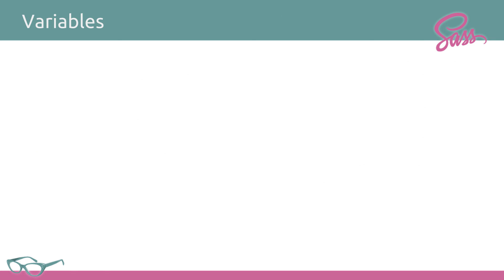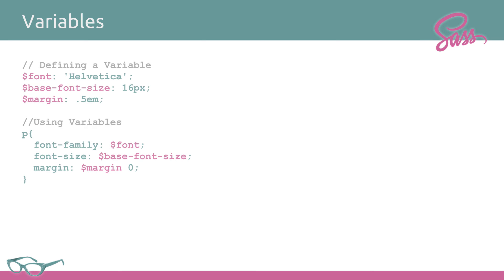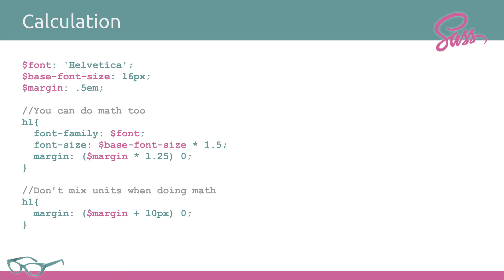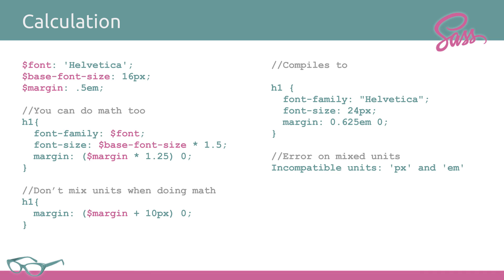The first and most wonderful thing — and I'm sure everybody who has used CSS has asked themselves, 'why can't I make that a variable?' — the answer is because CSS is not a programming language. But through SASS, we have the ability to define variables and utilize them within our project. Once this runs through the SASS compiler, it replaces things like base font size and margin. You can also perform calculations on those variables — for example, font size 1.5 times larger gives 24px, and margin 1.25 times larger gives 0.625em instead of 0.5.